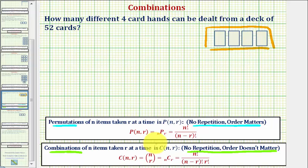So we use a combination to determine how many different four card hands can be dealt from a deck of 52 cards. We want to determine how many combinations there are of 52 cards taken four at a time. And notice how there are several ways to express a combination. Looking at the formula, notice that n equals 52 and r equals four.